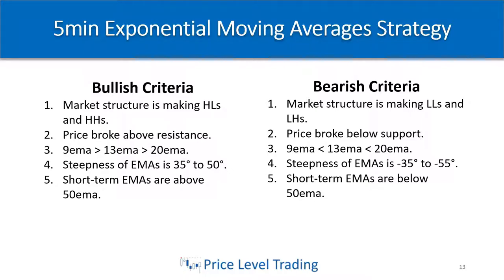I like to see the steepness a little more steep for bear setups because fear is about three times more powerful than greed. As we like to say in the stock market, it likes to take the escalator up and the elevator down. Several weeks and months of gains can be wiped out in a couple of days. So for bearish, the steepness of the EMAs should be between negative 35 degrees and negative 55 degrees. Short-term EMAs below the 50 EMA is not an absolute requirement, but the first three criteria are the most important.